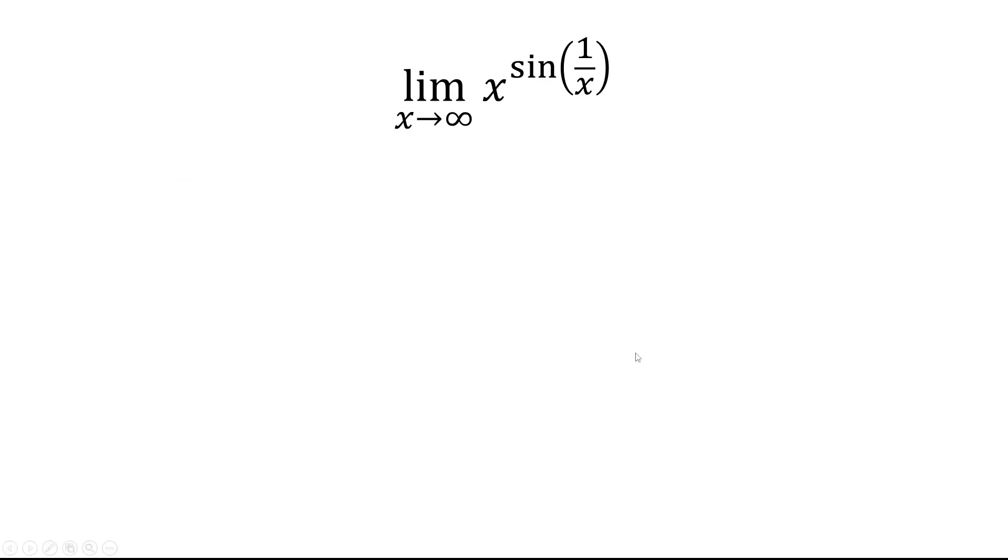So let's do the second limit. The derivative of natural log of x is 1 over x. The derivative of x is 1. So we have 1 over x there, and as x approaches infinity, that goes to 0.